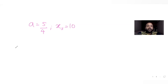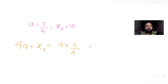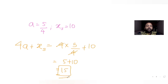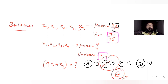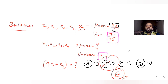Now we find the value of the expression 4a plus x5: 4 times 5/4 plus 10 equals 5 plus 10 equals 15. The answer for the expression is 15, and the option that matches is option B. So B is the correct answer.